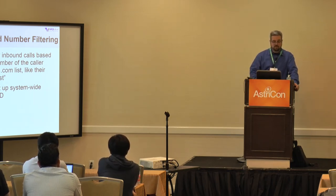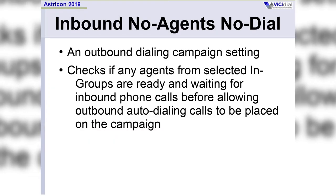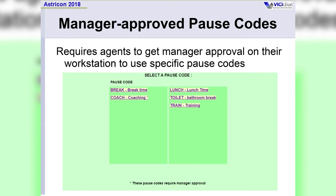This can be set up system-wide or per DID. Inbound no agents, no dial — this is a way of regulating call pacing on an outbound predictive campaign based upon the availability of closer agents. When there were no closers available, they want the pacing to come down on the fronter side. Manager approved pause codes is a minor feature that allows you to enter a pause code of, for instance, 'training', but not allow an agent to use it unless a manager actually enters their credentials on the agent's screen — a forced in-person approval for pause code usage.